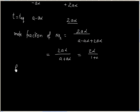We can calculate partial pressure due to NO2. This is mole fraction times total pressure. Mole fraction is 2A alpha divided by 1 plus alpha. Total pressure is P.